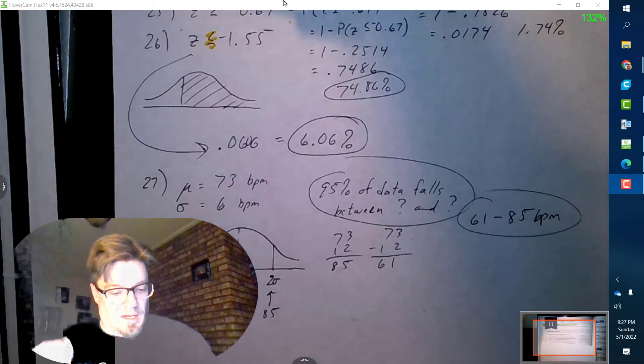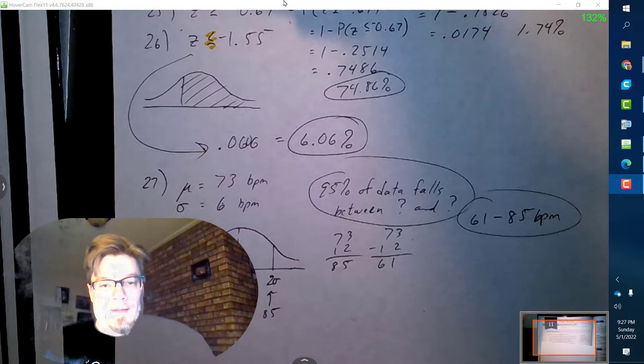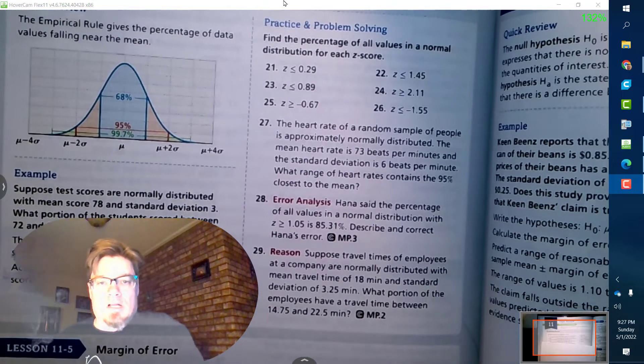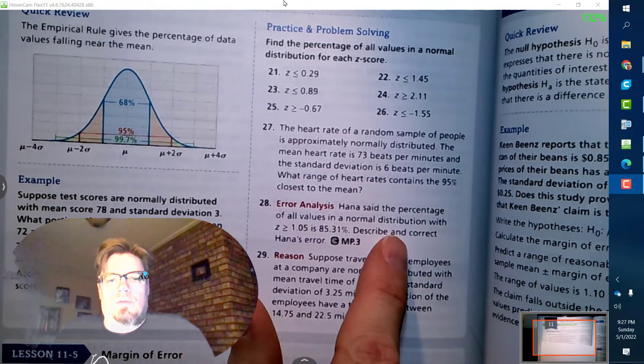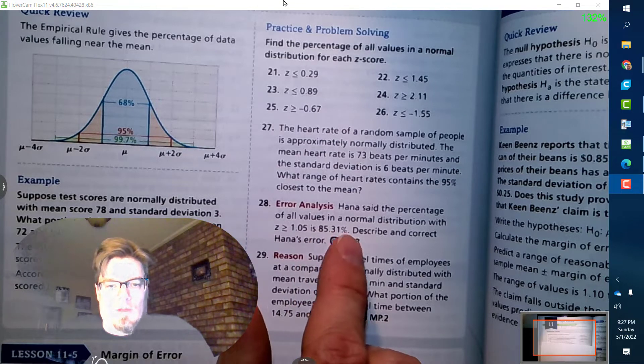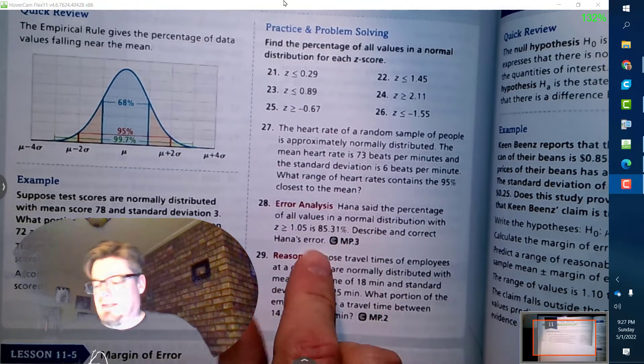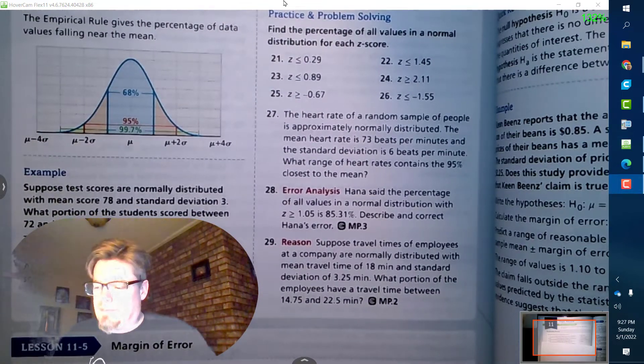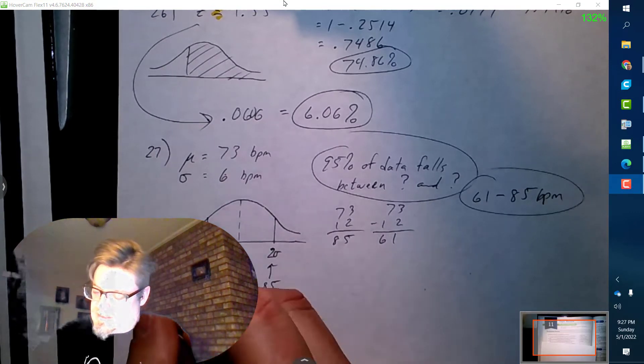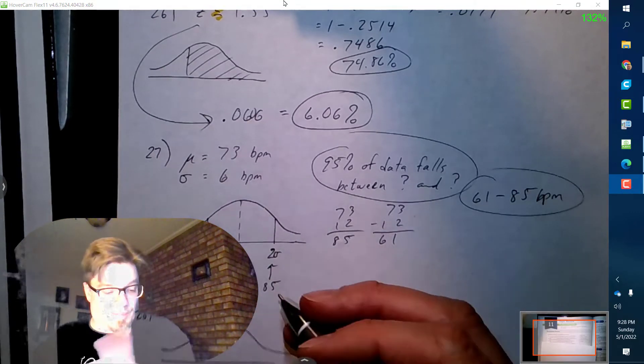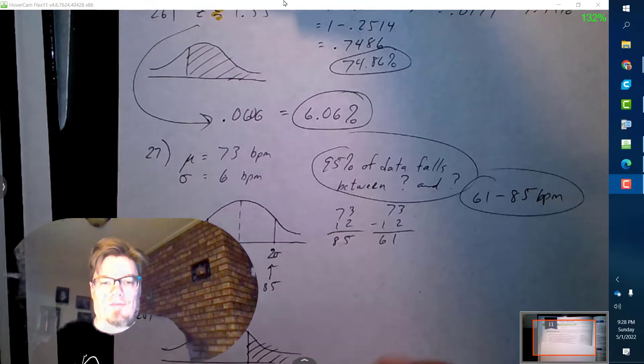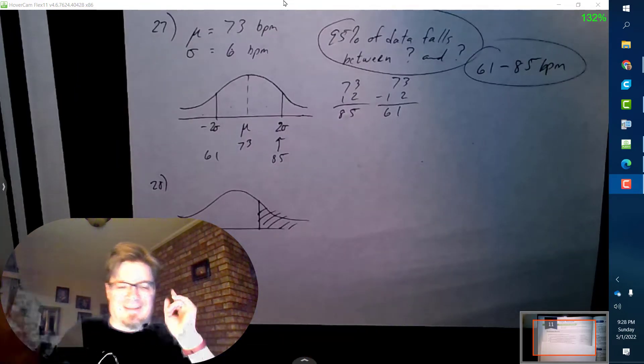All right, number 28. Hannah said the percentage of all values of a normal distribution with z greater than or equal to 1.05 is 85.31 percent. Describe and correct Hannah's error. Okay, now already, if I'm dealing with greater than 1.05, that's positive. So one standard deviation away - I can already tell there's no way that's 85 percent.